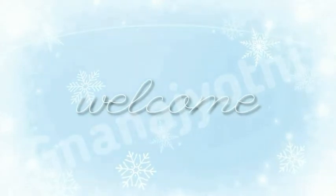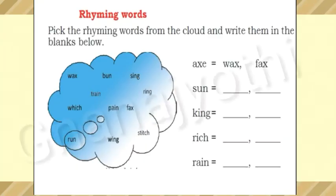Namaste my dear children, welcome back to my class. In this video, let us continue the unique 4 things we use and complete the remaining exercise of this unit — Rhyming Words. In previous classes we have already learnt about rhyming words: the words which have similar or same sound at the end. We call them rhyming words. Now coming to this activity — pick the rhyming words from the cloud and write them in the blanks below.